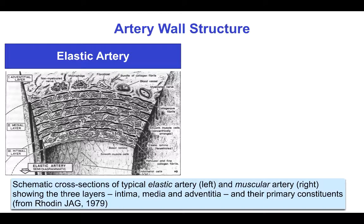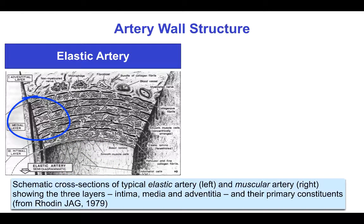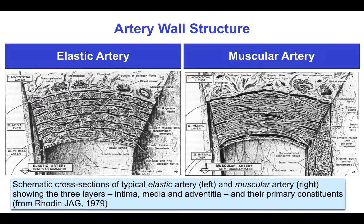Large and small arteries and arterioles have three layers: the intima, which is the single layer of endothelial cells on a basement membrane; the media, which has smooth muscle cells; and the adventitia, which includes connective tissue, nerves, and smaller vessels called the vasovasorum.